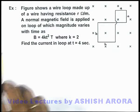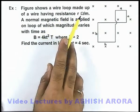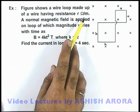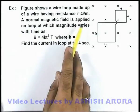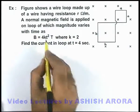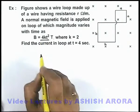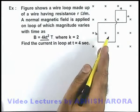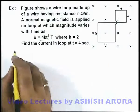In this example, the figure shows a wire loop made up of a wire having resistance r ohms per meter. A normal magnetic field is applied on the loop of which magnitude varies with time as B = 4kt² Tesla, where the value of k is a constant 2. We are required to find the current in the loop at t equal to 4 seconds.